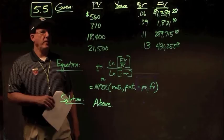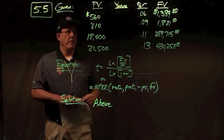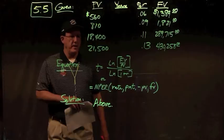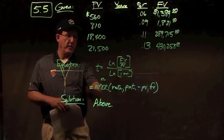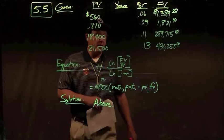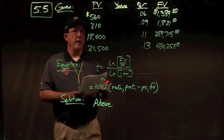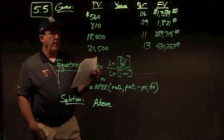In problem 5.5, we're given present values, interest rates, and future values, and we want to find the number of years — solving for T. Time equals the natural log of (Future Value over Present Value), divided by the natural log of (1 plus R). In Excel: =NPER(rate, payment, -PV, FV). We'll learn the math first before moving to Excel functions.